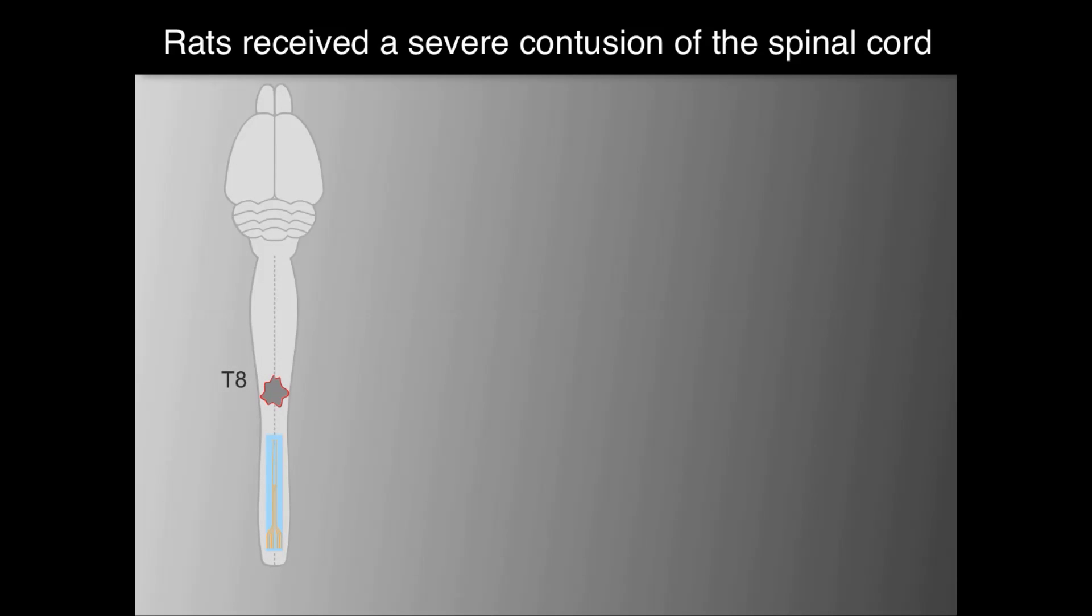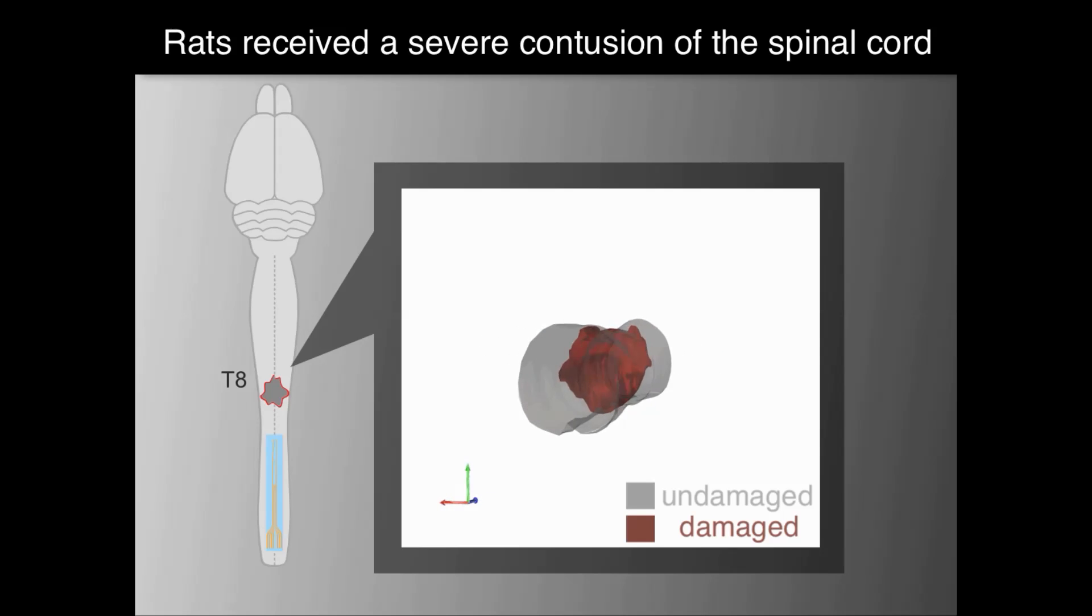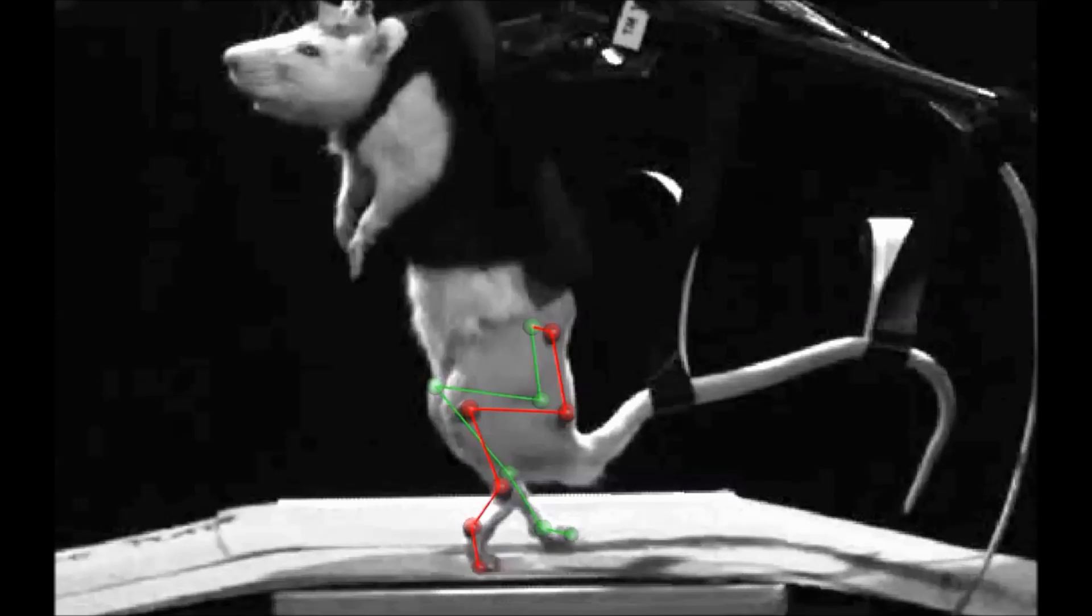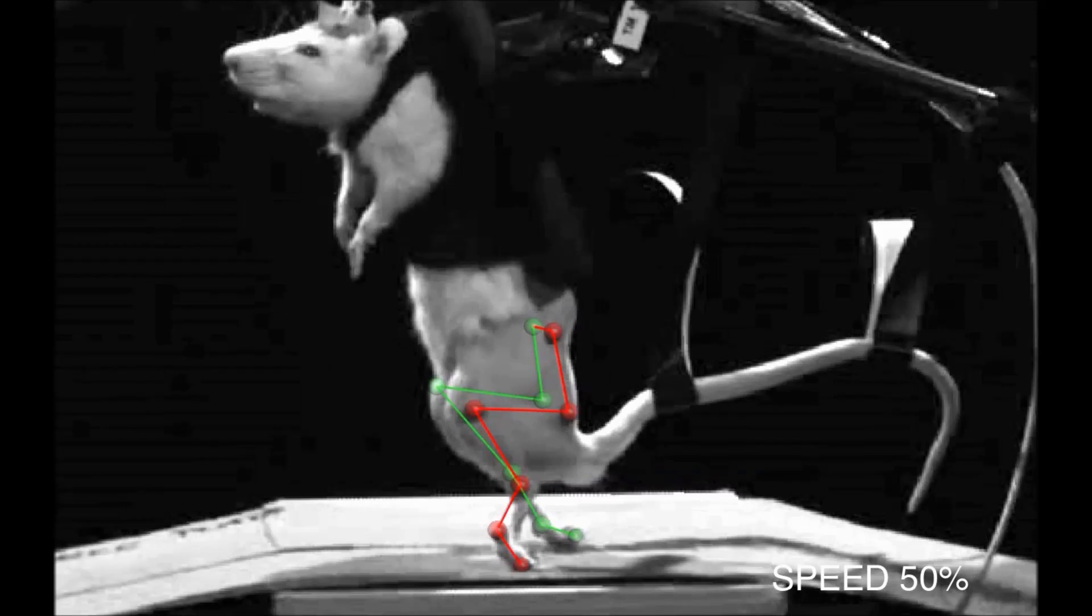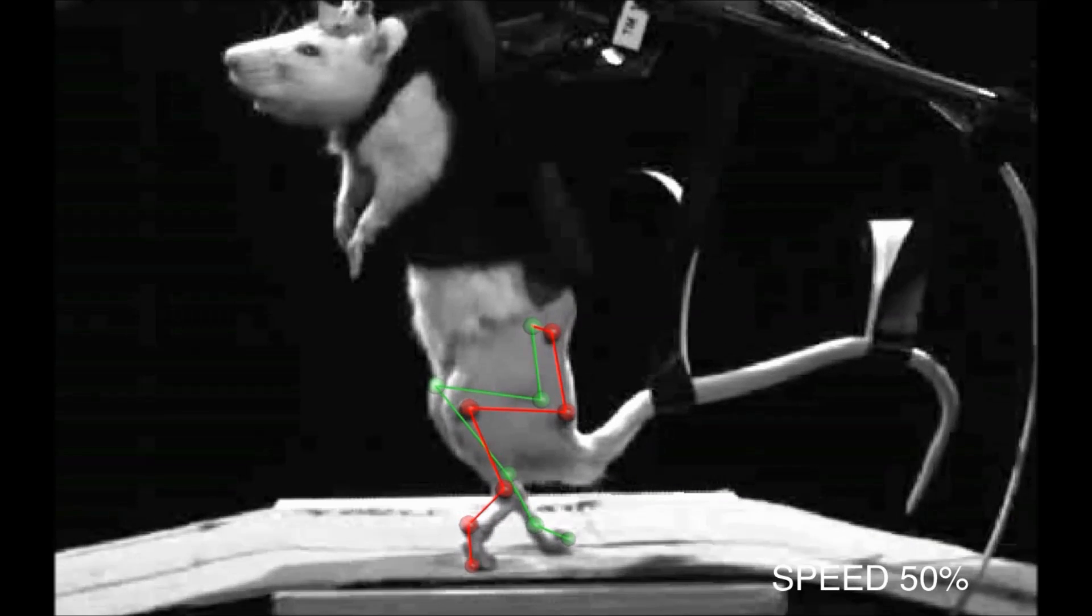The eDura was implanted over lumbar segments of adult rats. They received a severe contusion that spared less than 10% of spinal tissues. Rats were maintained bipedally in a robotic bodyweight support system over a moving treadmill belt.